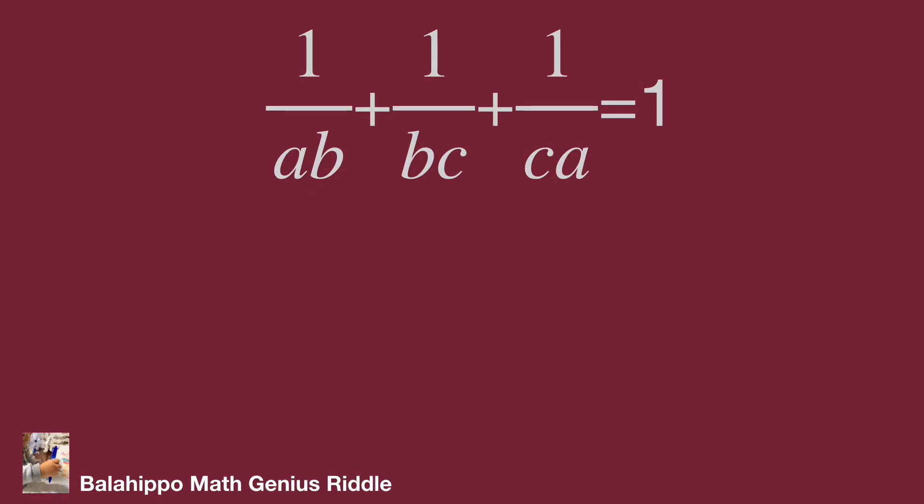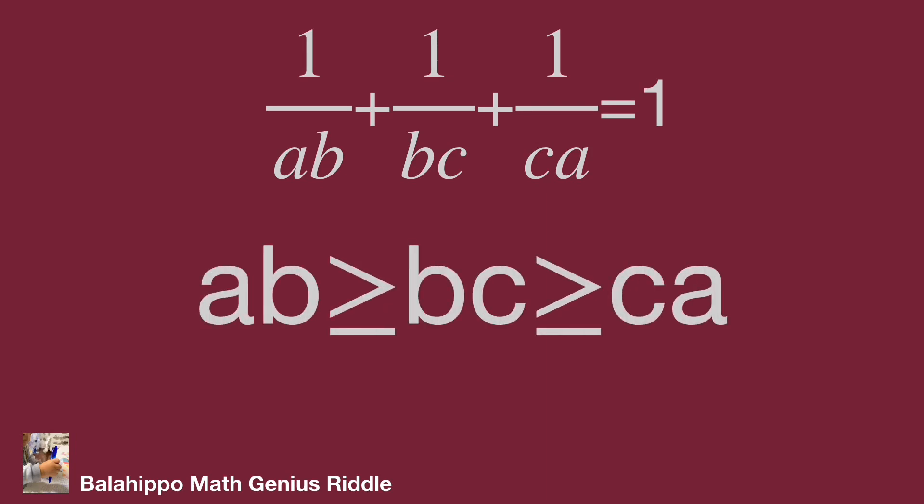Next stage, I'm going to narrow down the value scope. There are three fractions. If we swap A to B, B to C, and C to A, the result is the same. So we define AB larger or equal to BC larger or equal to CA.